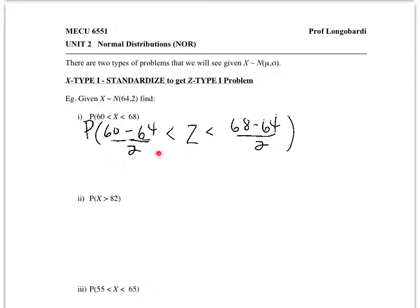Let's convert 60 into its standard deviations from the mean minus the mean divided by the standard deviation, and convert 68 into its standard deviations from the mean.